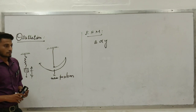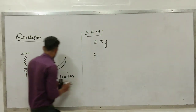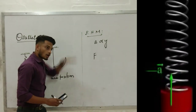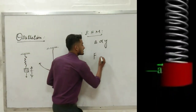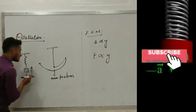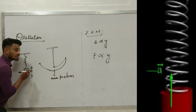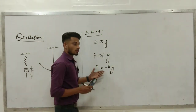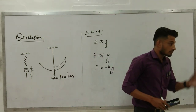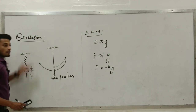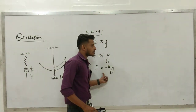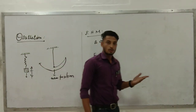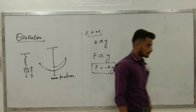We know that if we apply force, we get extension — force is directly proportional to displacement. The force acting in oscillation is the restoring force. F is equal to minus k y. The negative sign is because the restoring force acts opposite to displacement. This restoring force is directly proportional to displacement.